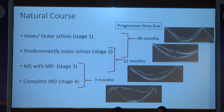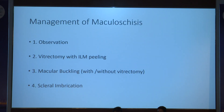As the disease progresses, the duration reduces. From stage 2 to stage 3, average duration is about 12 months, and from stage 3 to stage 4 is about 3 months. This is important for management. There are four different options: observation, vitrectomy, macular buckle, or imbrication.